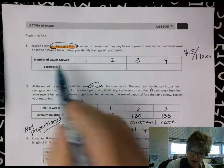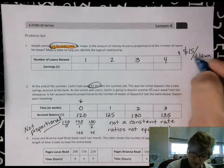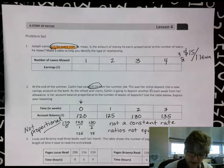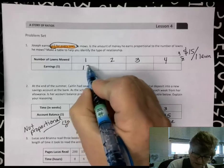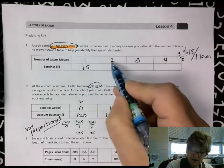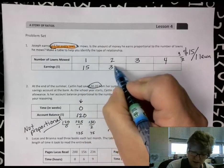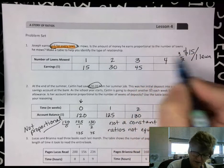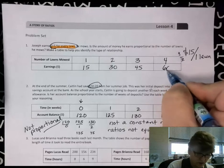So that is my earnings over my number mowed. So at $15, then after two lawns I've made $30, and after three I've made $45, and after four lawns I've made $60.